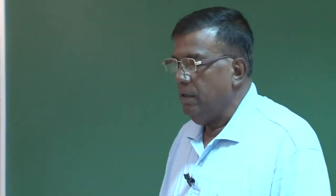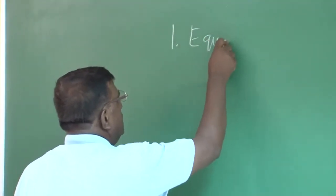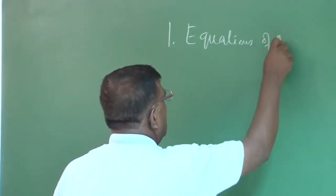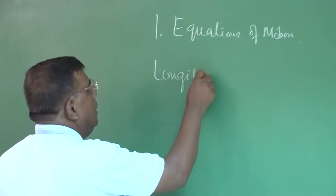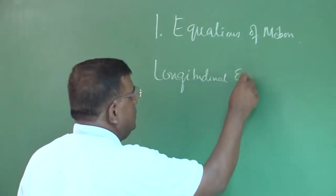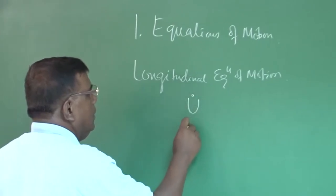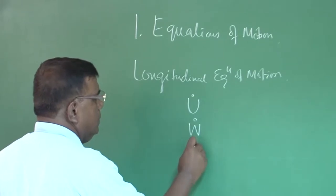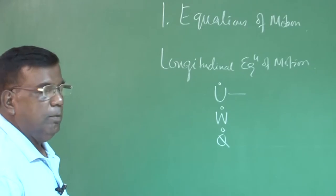Good morning friends. There are so many lectures; we were busy writing big equations and approximations and then trying to get some meaning out of it. What we did was: first we developed equations of motion, then we segregated longitudinal equations of motion, which primarily involved U dot, W dot, and Q dot — motion along x direction, motion along z direction, and pitching motion about y axis.